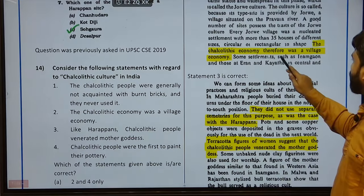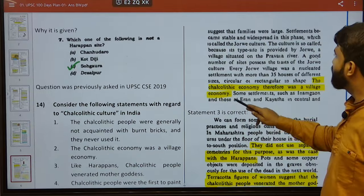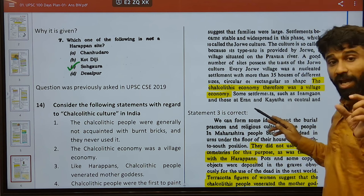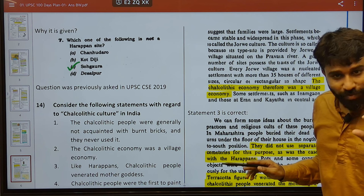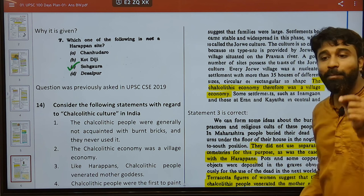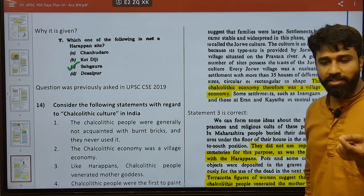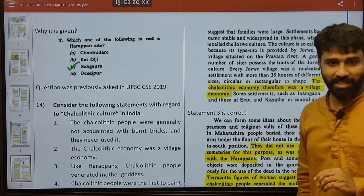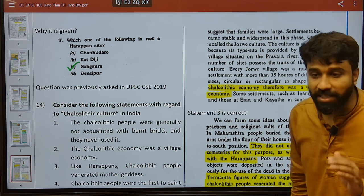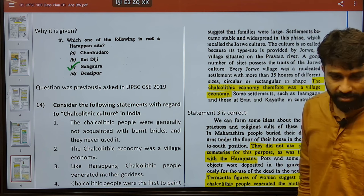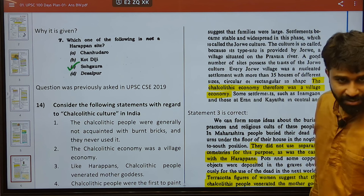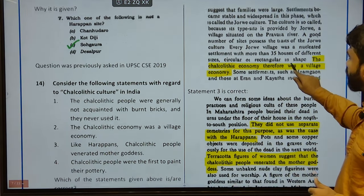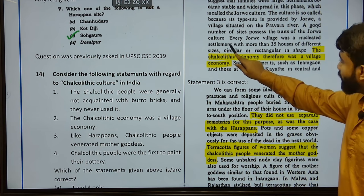The Chalcolithic economy therefore was a village economy. Settlements became stable and widespread in this phase. They followed Jorwe culture — a village culture in Maharashtra, located beside the Pravara, a tributary of Godavari. This culture was named after the village Jorwe. A good number of sites possess the traits of Jorwe culture — every Jorwe village had 35 to 40 houses, settled communities who practised agriculture, with circular and rectangular shapes of houses and storehouses.